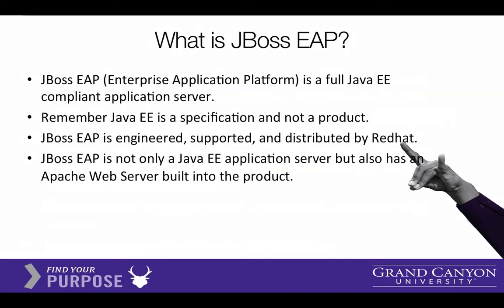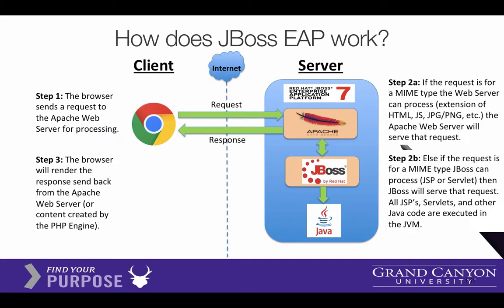JBoss is a web server that also runs Java code. So how does a server work, especially this JBoss server? On the left side we've got the client — Chrome or Internet Explorer — and that's where requests are initiated. Across the internet, the request arrives at the server.